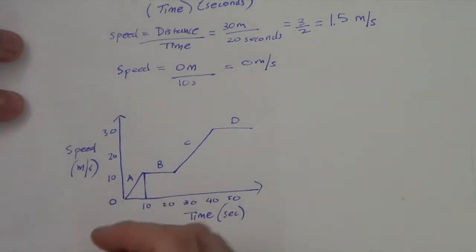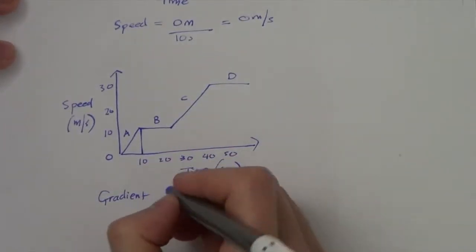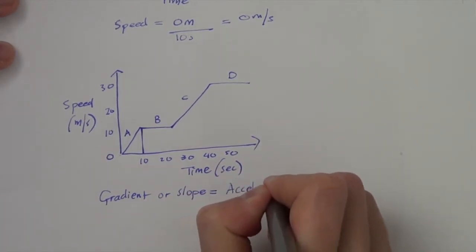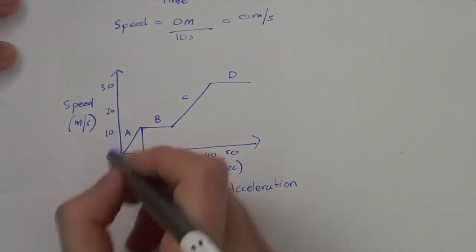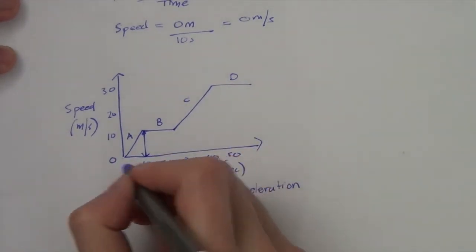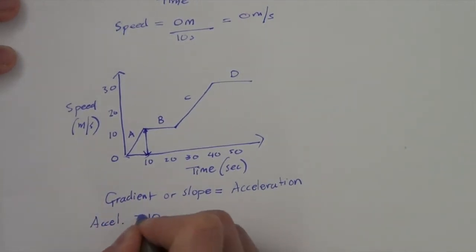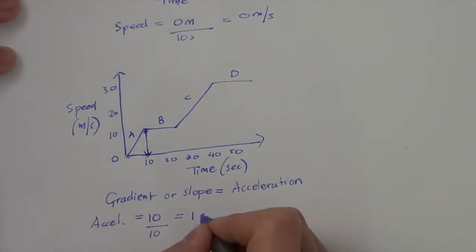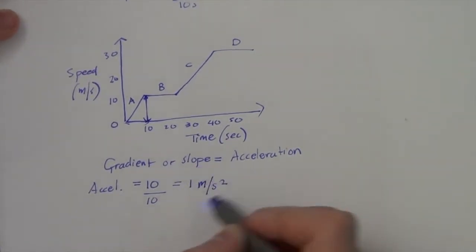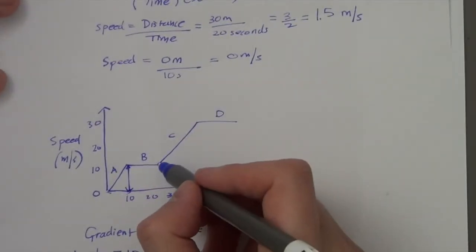From a speed-time graph, the gradient or slope is equal to the acceleration. In this case, the change in speed is 10 minus 0 = 10, and the time is 10 seconds. So the acceleration equals 10 over 10, which is 1 metre per second squared. Make sure you do not forget the units, because you can lose marks on a test.